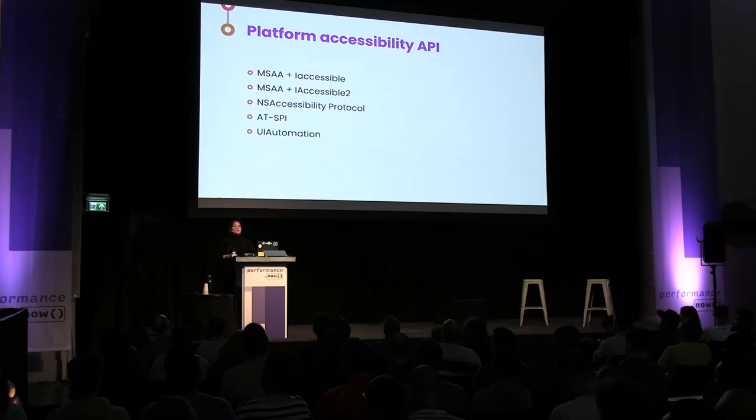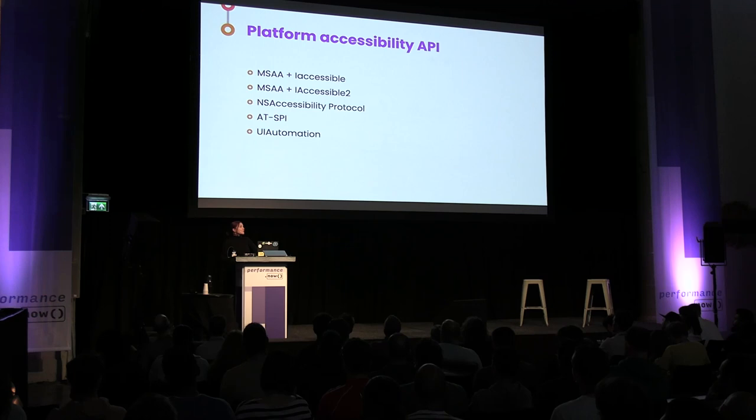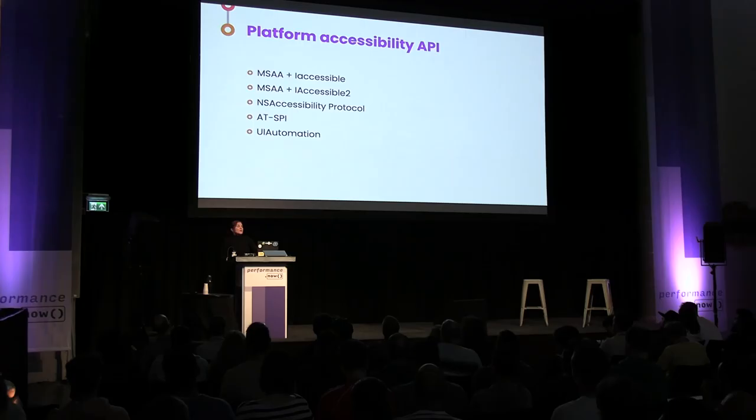Screen readers and other assistive technologies use platform accessibility APIs to query information out of the accessibility tree. These are not JavaScript APIs — they're not ones you can use as developers. They're available on the platform itself. All platforms have them: Microsoft has UI Automation, MSAA, and IA2; macOS, iOS, Linux, and Android all have them too. These are the APIs a screen reader uses to say to the browser: 'Give me some information because I've got a user who needs to know what's on screen.'